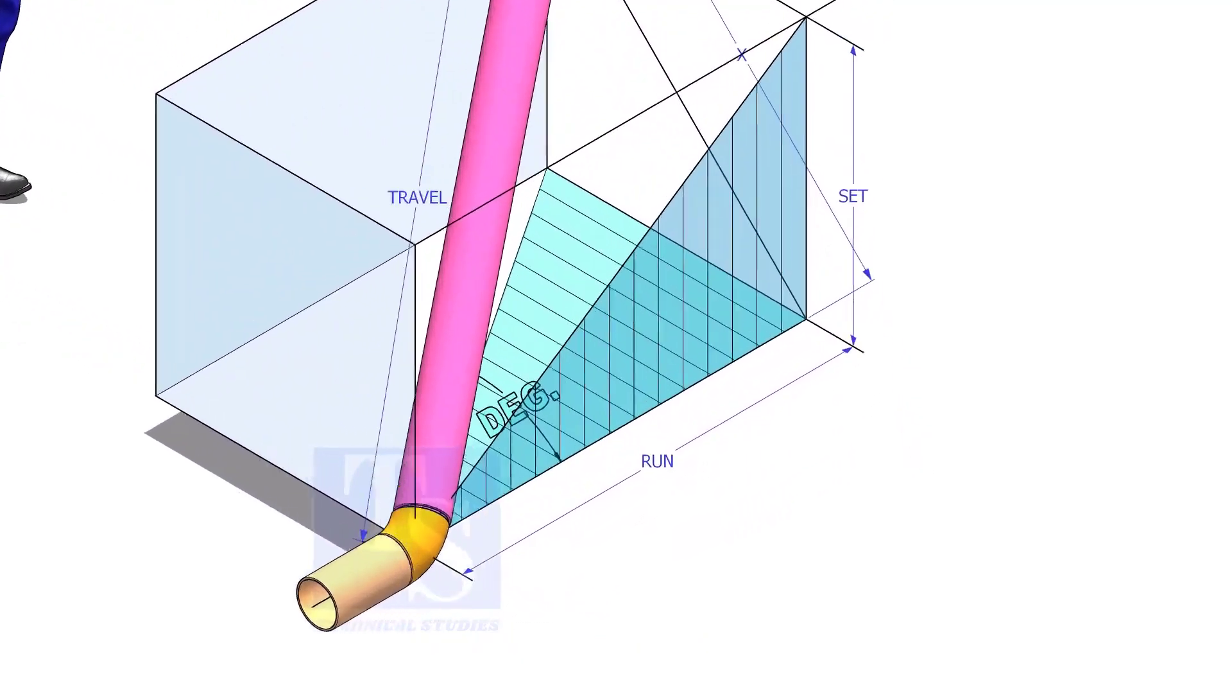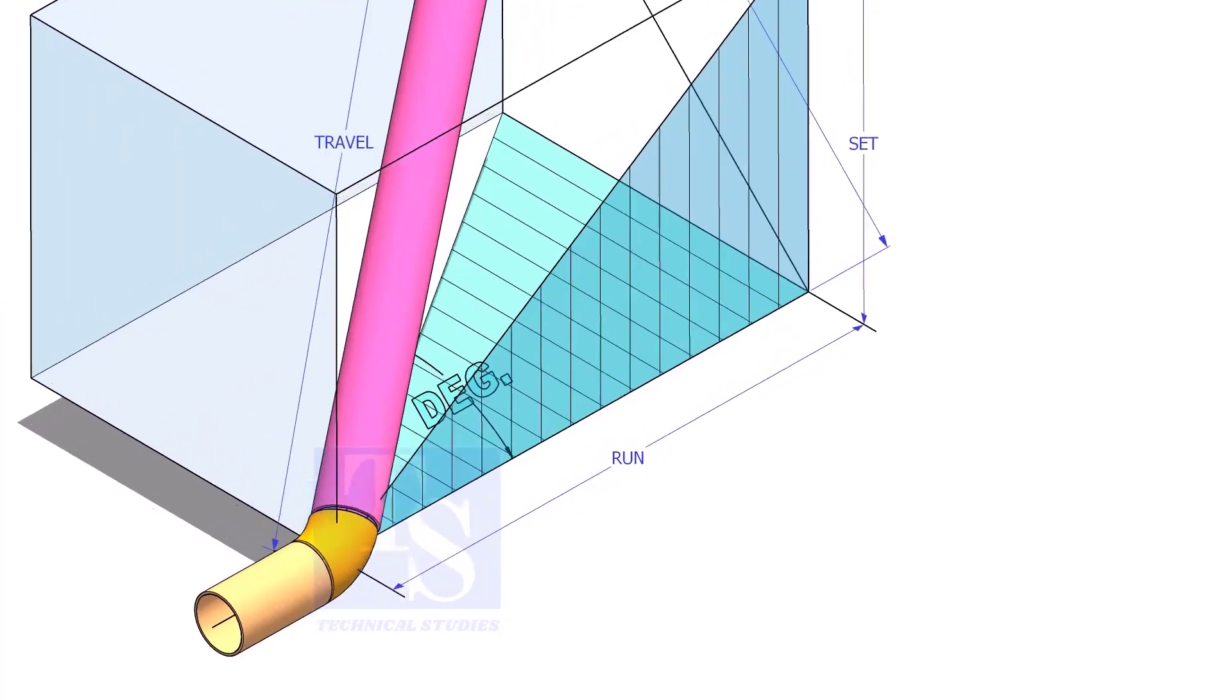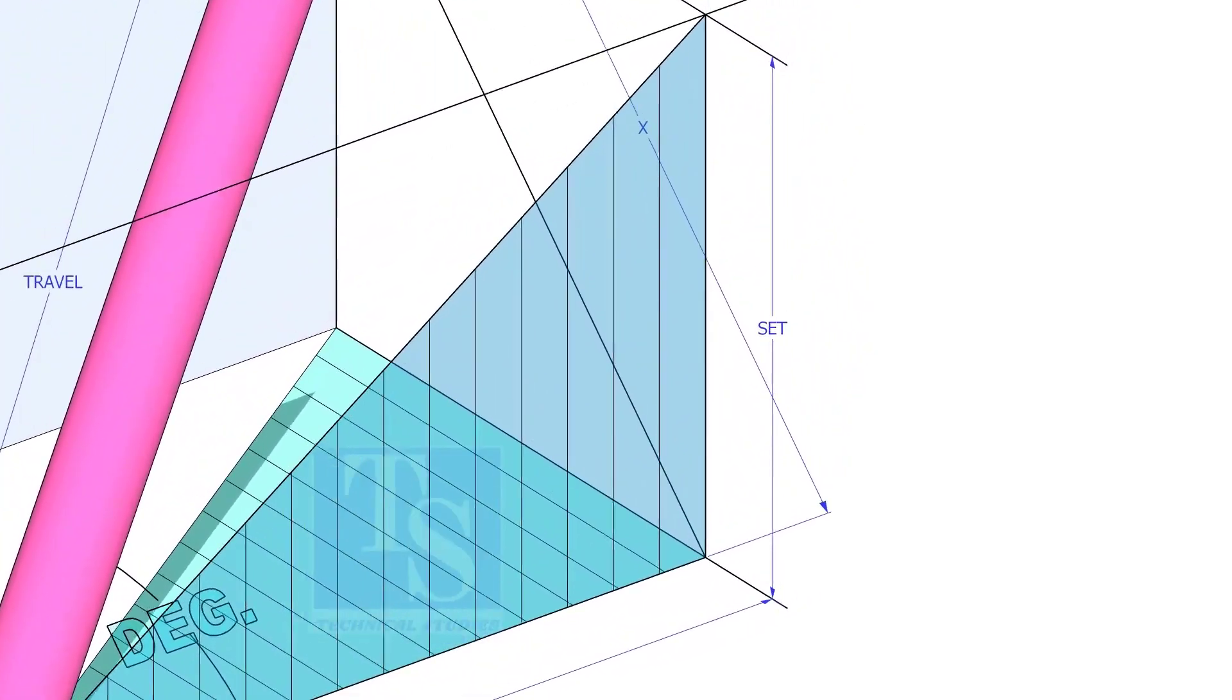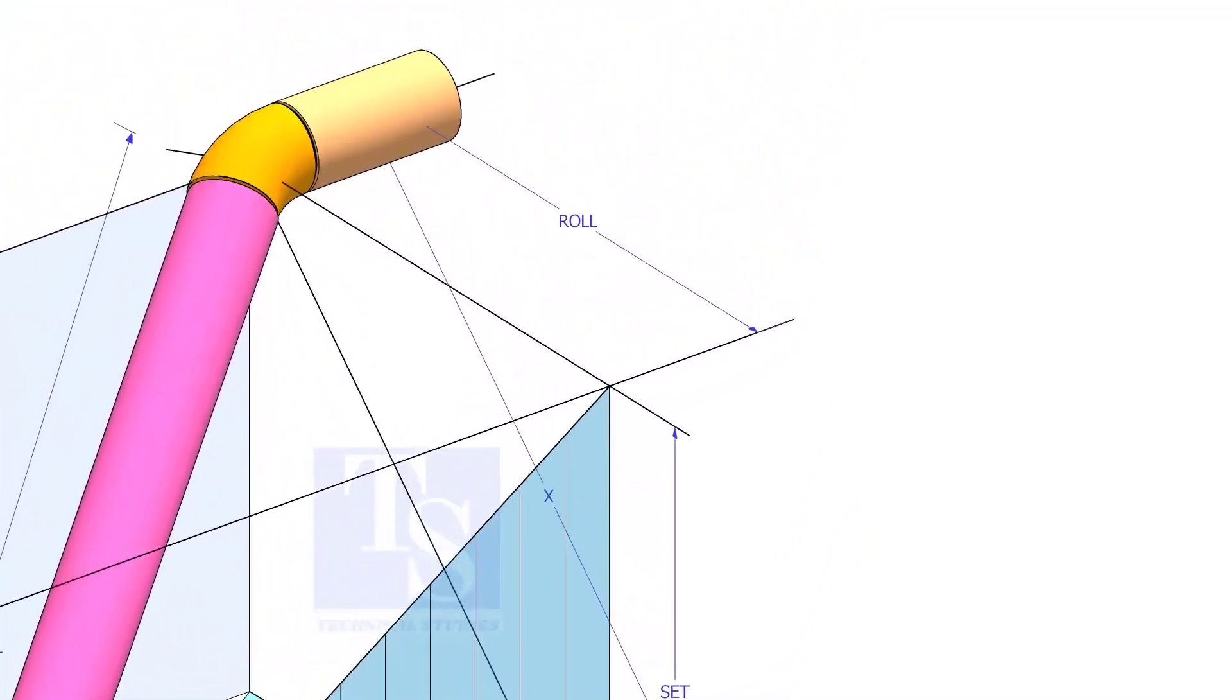In this video, I will show you how to calculate the travel length and the including angle of a double rolled offset pipe.